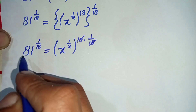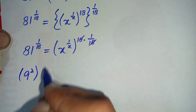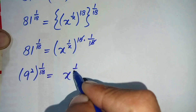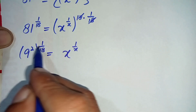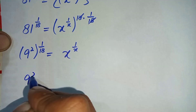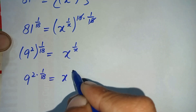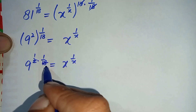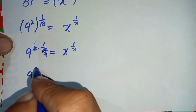We can write 81 as 9 times 9, which is 9 squared. So let us replace 81 with 9 squared, raised to power 1 over 18, equal to x raised to power 1 over x. In the next step, on the left hand side we multiply the two powers: 9 raised to power 2 times 1 over 18. Simplifying, 2 over 18 equals 1 over 9, so the left hand side becomes 9 raised to power 1 over 9.